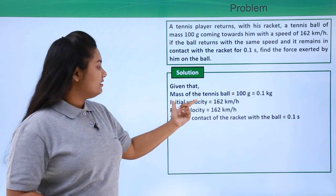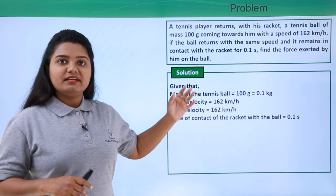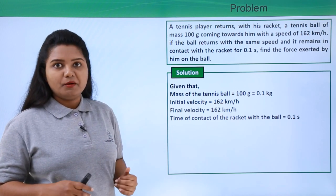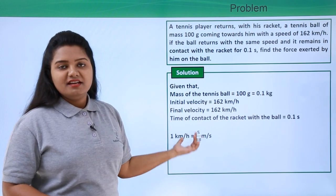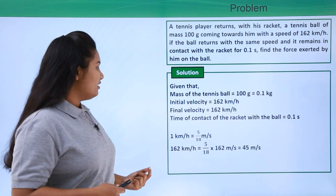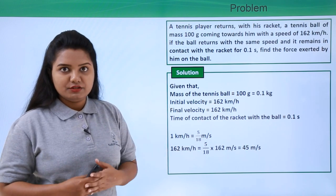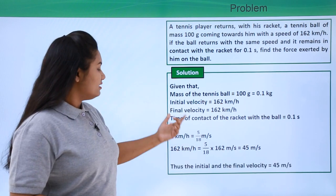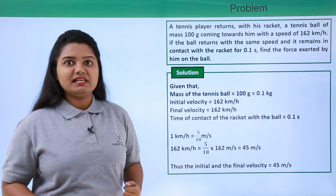The initial and final velocities are given in kilometers per hour, which is not in SI, so we convert them to meters per second first. Using the relation 1 km/h = 5/18 m/s, we get 162 km/h = (5/18) × 162 = 45 meters per second. So the initial velocity equals the final velocity, both equal to 45 meters per second in SI units.